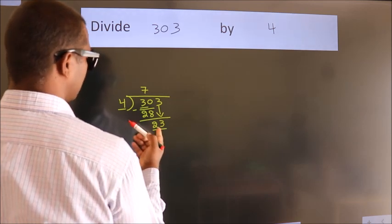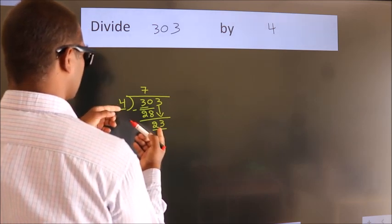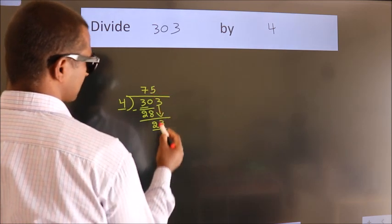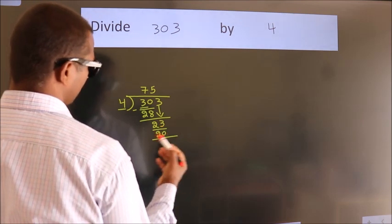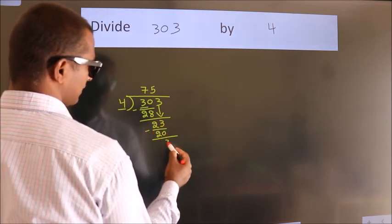A number close to 23 in the 4 table is 4 times 5 equals 20. Now we subtract. We get 3.